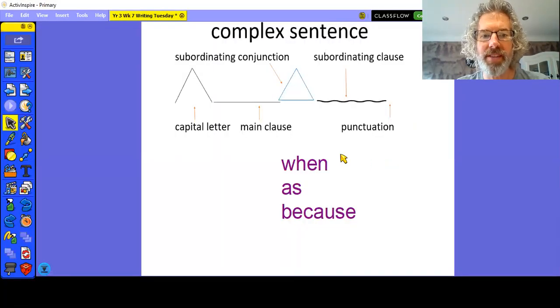So a complex sentence starts in the same way as a compound sentence and a simple sentence. It starts with a capital letter, and you have your main clause, your main idea. But this time, you have a subordinating conjunction. And following that is a subordinating clause with the punctuation on the end. Now there are loads of subordinating conjunctions that you can use, but just to keep it simple today, I'm limiting it to when, as, and because, just to make it simpler. But we can expand that list as your writing develops.